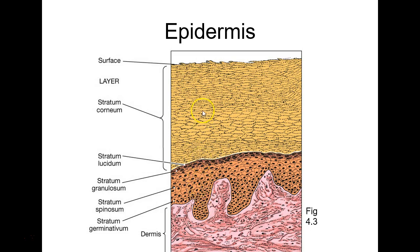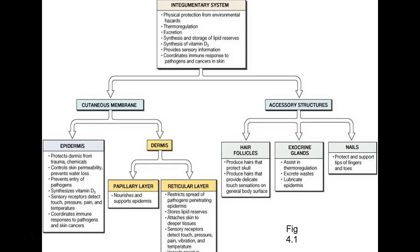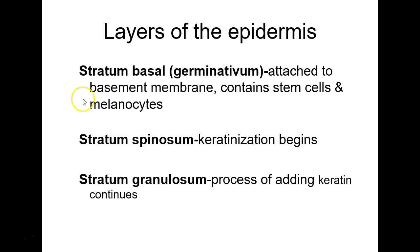The epidermis runs from the basement membrane to the top and is divided into five strata. The bottom, closest to the basement membrane, is called the stratum germinativum — the old name — or stratum basale. It's attached to the basement membrane, contains stem cells, and can have melanocytes for producing melanin.